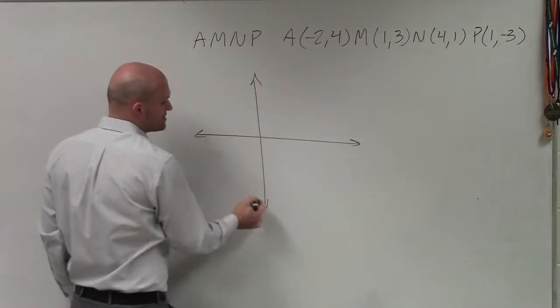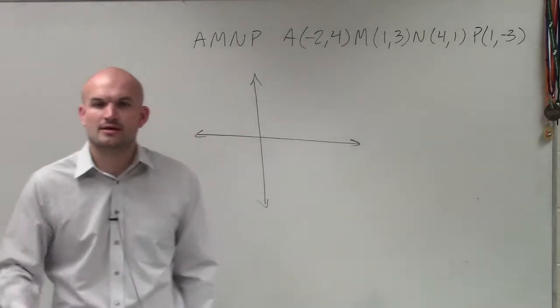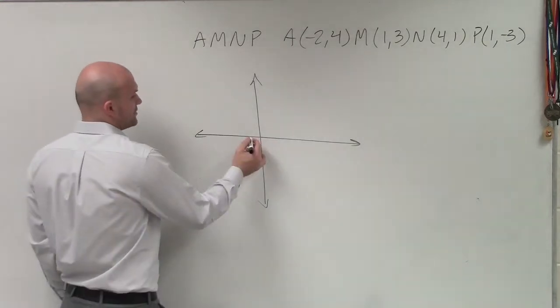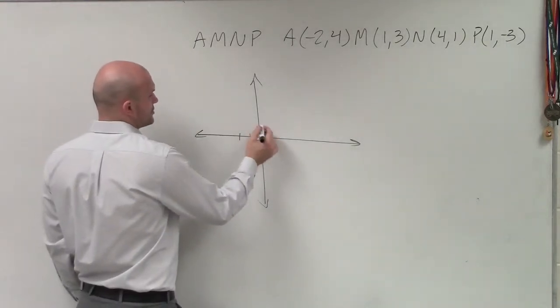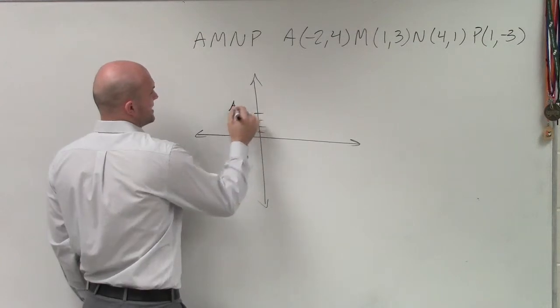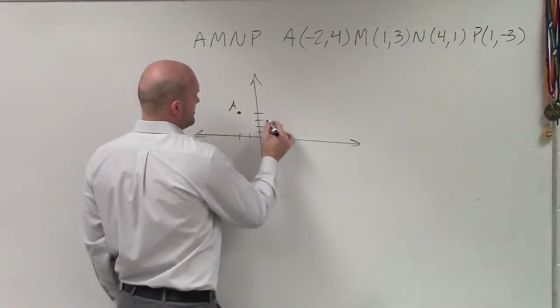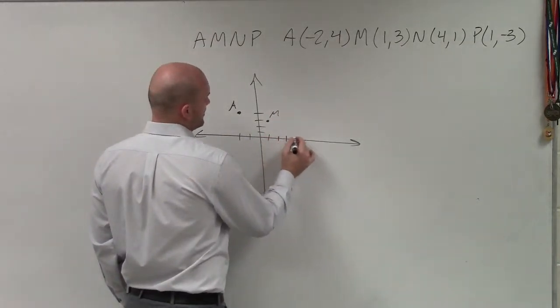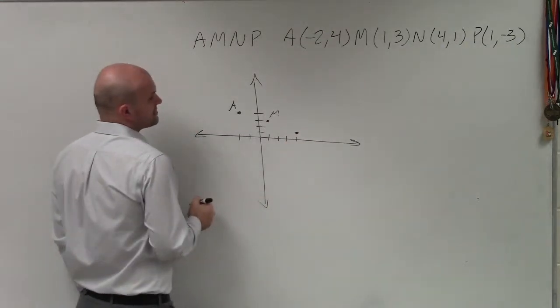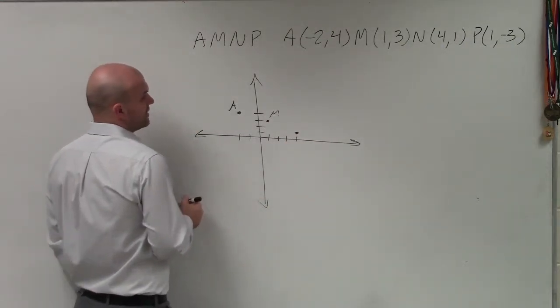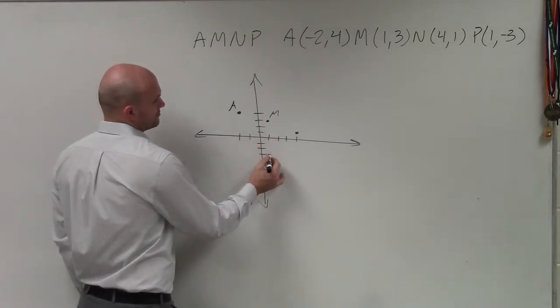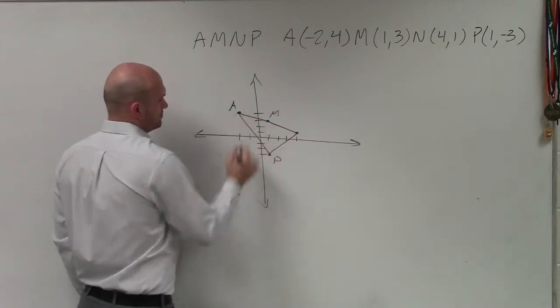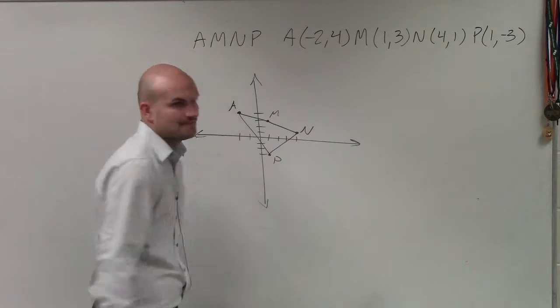Now, remember, guys, when you're drawing these points, make sure you always label the points. We do negative 2, up 4. That's A. We have 1, 3, that's M. We have N, which is 4, 1. And then we have P, which is 1, negative 3. So that's my polygon.